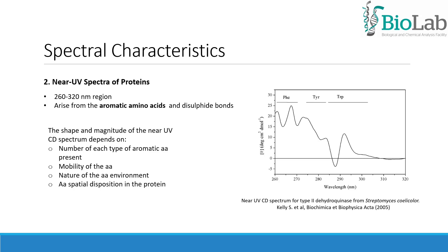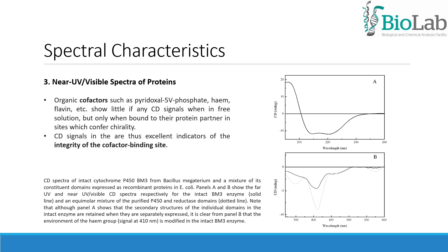Near UV CD spectra of proteins are not readily amenable to detailed interpretation in terms of tertiary structural features. Nevertheless, near UV CD spectra can be very useful fingerprints for comparisons of tertiary structures between related proteins, for example wild type and mutant proteins, and have been invaluable in studies of the molten globule state of proteins. CD in the near UV and visible region can give a great deal of information on the environments of cofactors, which play an integral role in the biological activity of the protein or of other non-covalently bound ligands. Typically, the free ligand or cofactor has little or no CD signal; the observed CD signals in the complex therefore indicate that the binding site of the ligand or cofactor confers chirality. The loss of integrity of the binding site during the unfolding of the protein can be conveniently monitored by changes in the CD signal, making CD signals excellent indicators of the integrity of the cofactor binding site.